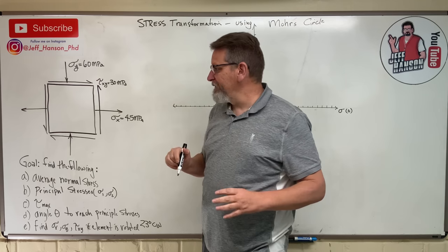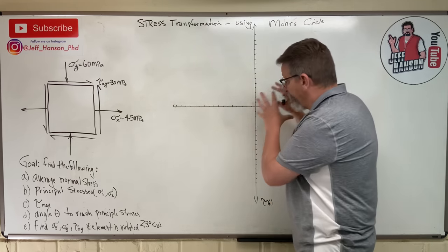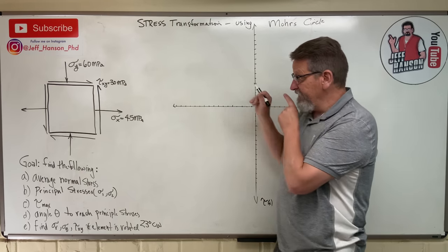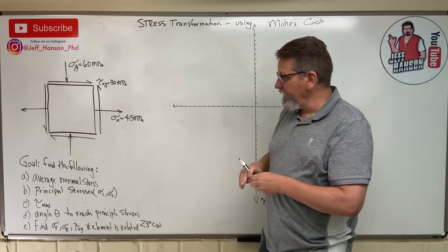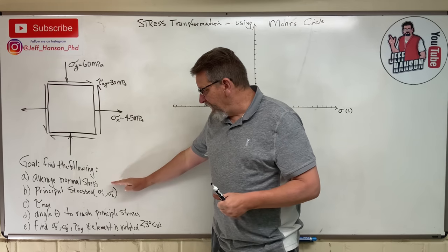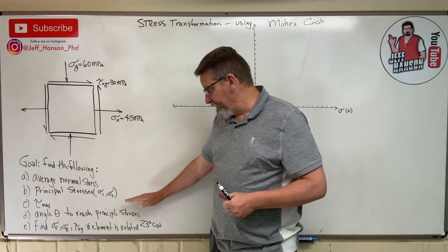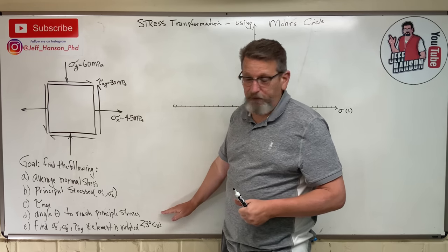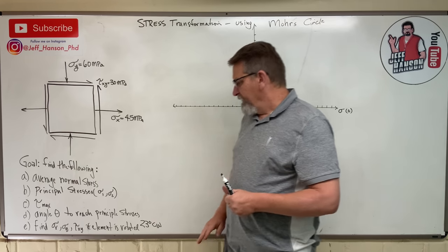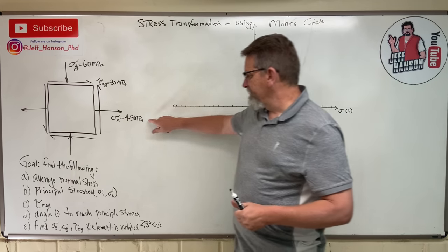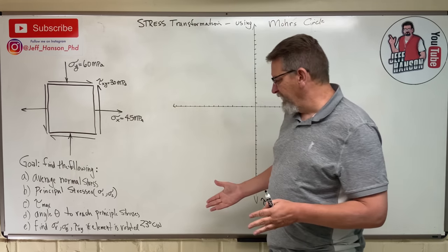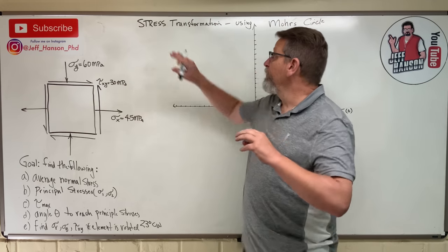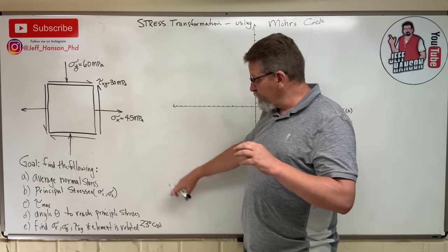All the information you need to plot your Mohr's Circle is contained right there in the stress element. Now look at all the things they're asking us to find: average normal stress, the principal stresses, tau max, the angle theta to reach the principal stresses, and finally find sigma x, sigma y, and tau xy if the element is rotated 23 degrees clockwise. So we want to do a stress transformation of 23 degrees.